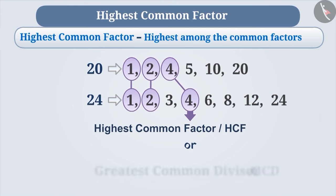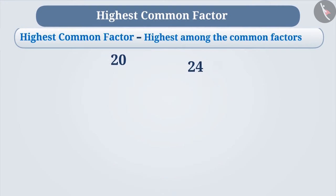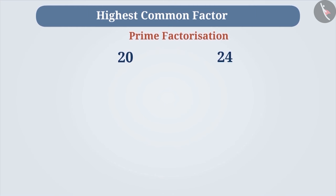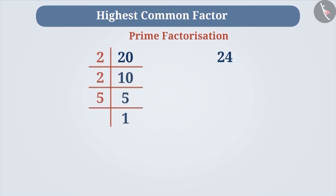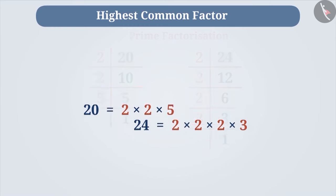It is also known as the greatest common divisor or GCD. Let's learn to find the HCF of the given numbers. Let's find the HCF of 20 and 24. First, perform the prime factorization of these two numbers. The prime factorization of 20 gives us 20 = 2 × 2 × 5. Similarly, perform the prime factorization of 24, which gives 24 = 2 × 2 × 2 × 3.